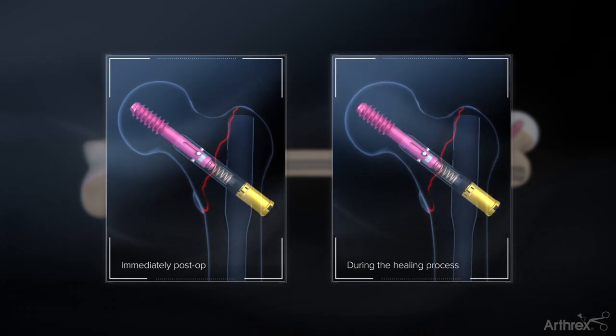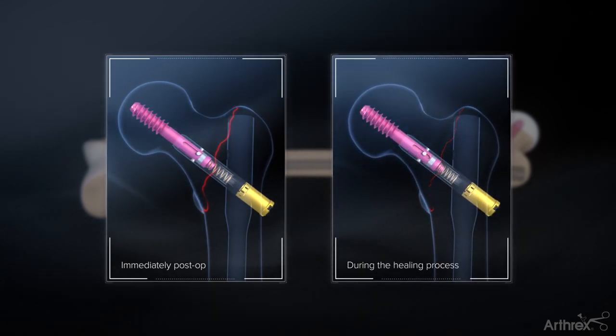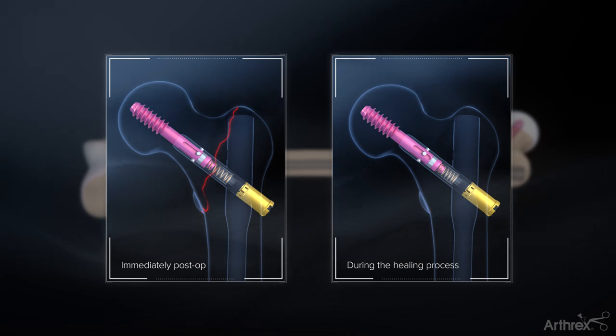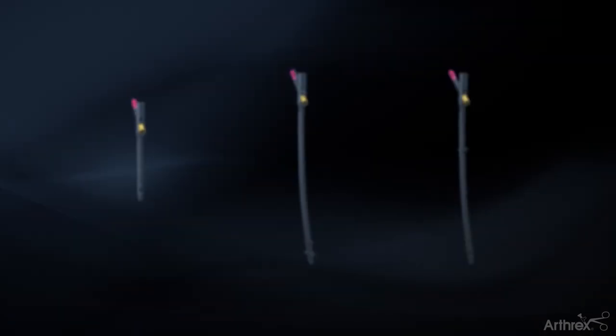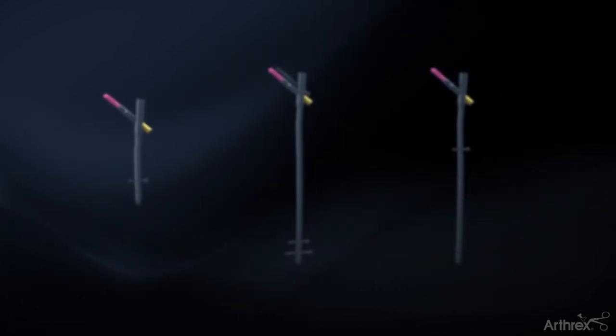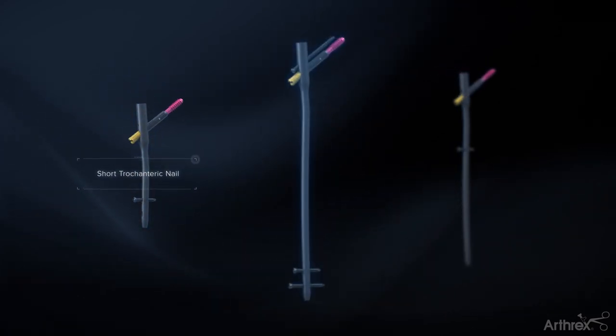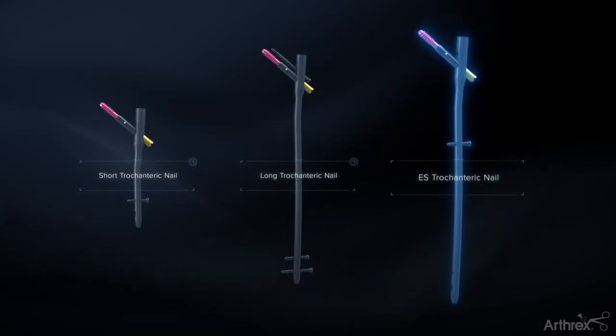As the fracture begins to heal, the telescoping lag screw is able to compress up to 10 mm without any lateral protrusion into the surrounding tissue. The Arthrix Trochanteric nail system is available in three nail types: the short nail, long nail, and innovative ES nail.